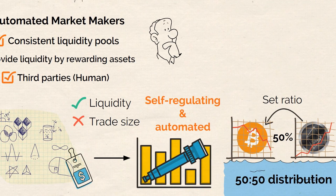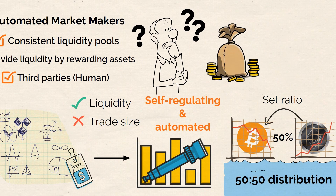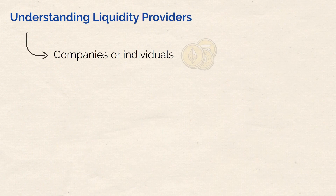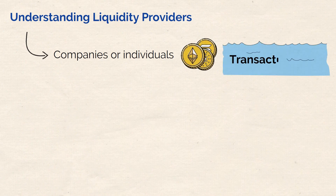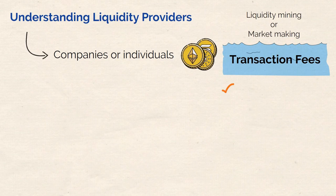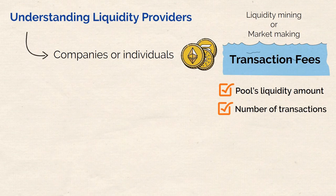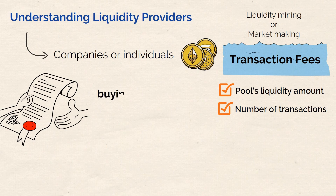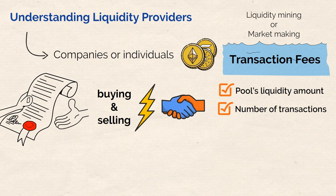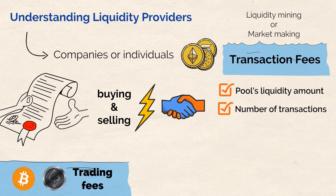Who actually puts up the funds to enable liquidity pools in the first place? Liquidity providers are companies or individuals that deposit cryptocurrency tokens into liquidity pools to earn transaction fees. This process is also known as liquidity mining or market making. The fees earned are determined by the pool's liquidity amount and the number of transactions taking place. Liquidity providers help make trading easier by offering both buying and selling options, allowing traders to make transactions quickly and at desirable prices. They add equal amounts of two tokens to the pool and earn trading fees based on their share of the total liquidity.